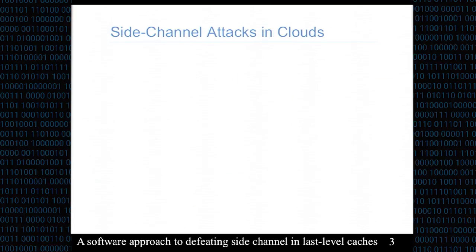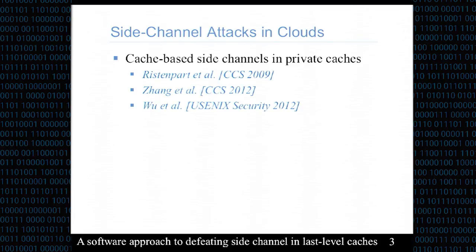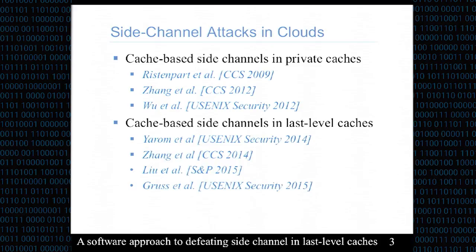In recent years, more and more researchers have explored the possibilities of same-core and cross-core side channels in the cloud environment. Side channels using the private cache require attackers to be scheduled on the same core, making them less applicable to cloud. But side channels in the shared last-level cache only require collocation of different tenants, and many works have proved their applicability in cloud environments, including extracting private keys from crypto algorithms.